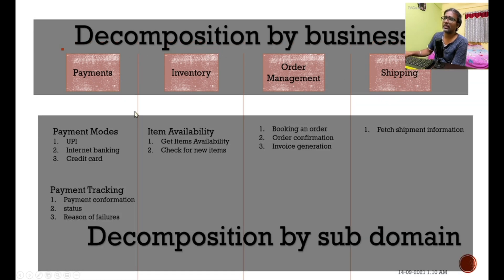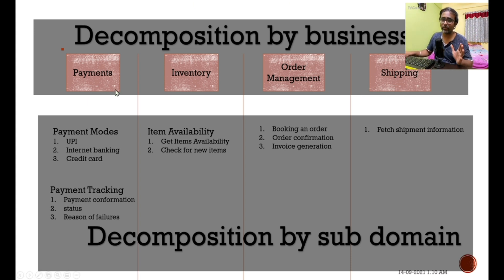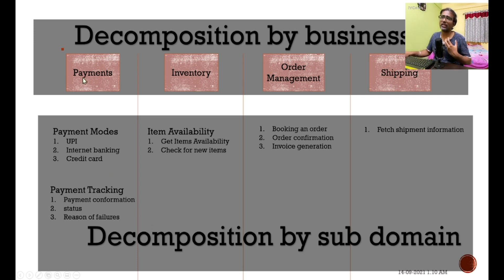Payments, inventory, order management, and shipping represent decomposition by business. So now you understand — before we build a microservice architecture, before we decide how many microservices we need, we have to understand the business. We divide our business based on the main domain, then go a little bit granular based on the subdomain, like payment methods and payment tracking under payments.